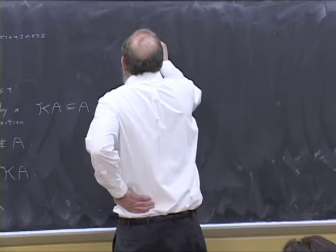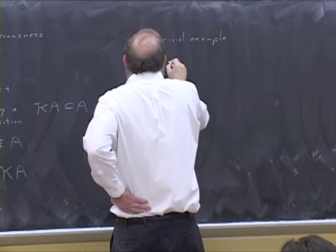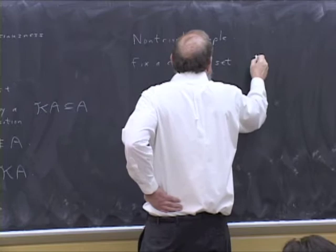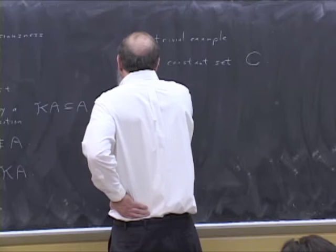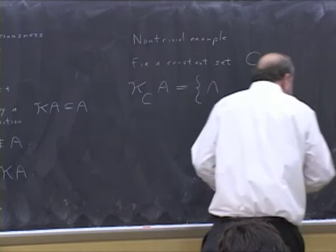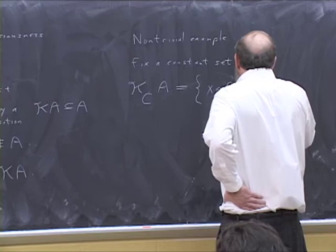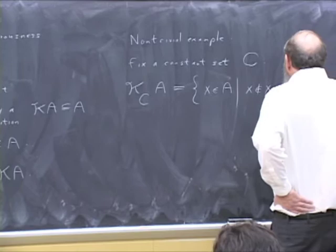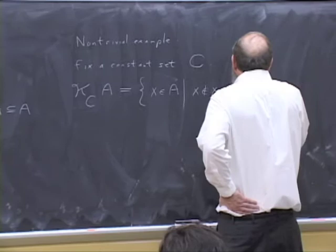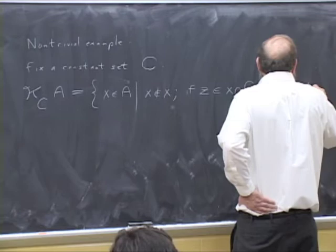So let's give a non-trivial example. So let's fix a constant set C. And now I'm going to define kc of A to be those elements of A which are normal, but which have a further property that if Z is in X intersect C, then Z is normal.